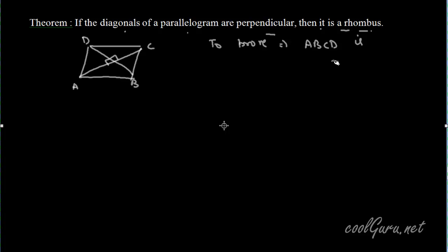Given that diagonals are perpendicular to each other, that is AC is perpendicular to BD. Now consider triangles - let this point of intersection be O, then triangle AOD and triangle COD.